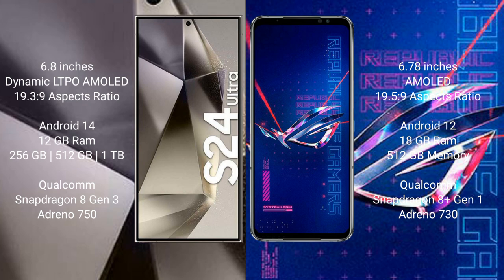The ASUS ROG Phone 6 Pro runs on Android 12. The Samsung Galaxy S24 Ultra comes with 12GB RAM and 256GB, 512GB, or 1TB internal storage, a Qualcomm Snapdragon 8 Gen 3 processor, and GPU Adreno 750. The ASUS ROG Phone 6 Pro comes with 18GB RAM and 512GB internal storage, a Qualcomm Snapdragon 8 Gen 1 processor, and GPU Adreno 730.